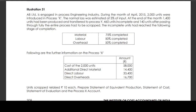Illustration 31. AB Ltd is engaged in the process engineering industry. During the month of April 2015, 2000 units were introduced in process X. The normal loss was estimated at 5% of input. At the end of the month, 1400 units had been produced and transferred to process Y, 460 units were incomplete, and 140 units passing through the entire process had to be scrapped.